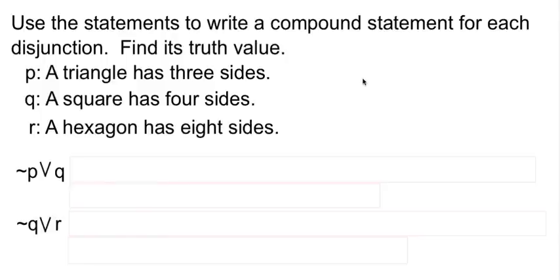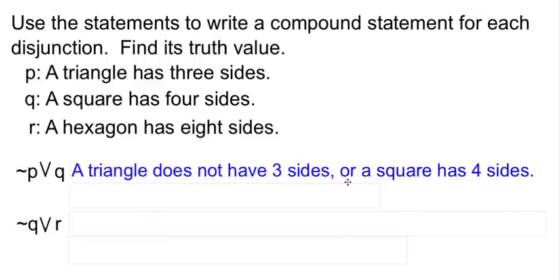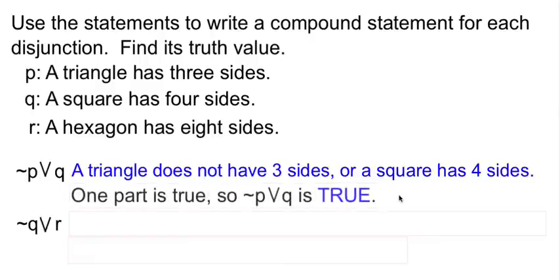Now compare that with the idea of a disjunction using the same P, Q, and R. I'm going to throw in disjunctions here, and I'm going to remind you about negation while we're going. We have not P or Q. Well, not P, instead of 'a triangle has three sides,' we would say 'a triangle does not have three sides.' Or Q says 'a square has four sides,' so our disjunction is 'a triangle does not have three sides or a square has four sides.' The first part is false, triangles do have three sides. The second part however is true, a square does have four sides. Since one or the other of the statements was true, that's all I need to be able to say not P or Q is true.